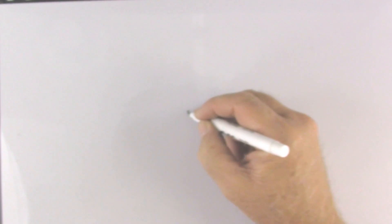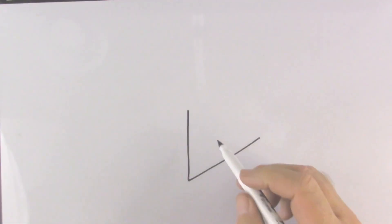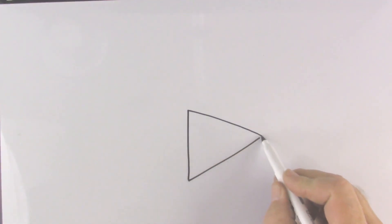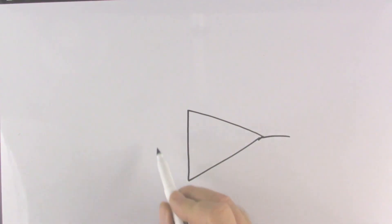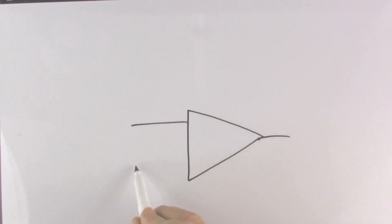In this video we are going to talk about the non-inverting amplifier. In the previous video we talked about the voltage follower, and we'll look at that again because the non-inverting amplifier is the next step in operational amplifiers.